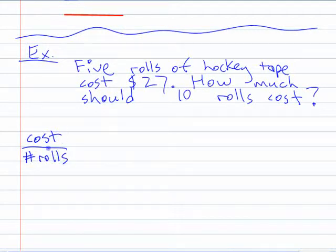So what I'm saying is $27 over five rolls, that's equal to – what's the unknown here? Which thing is unknown? Like is the cost unknown or the number of rolls? The cost is unknown.